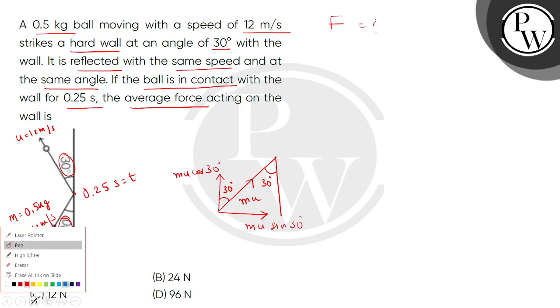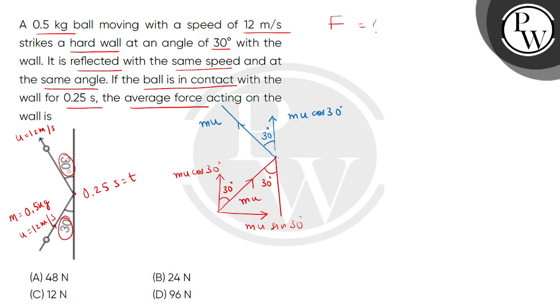Now, when we consider after reflection picture, the ball is reflected in this way. And again, the angle given is 30 degrees. So again, the momentum of this magnitude is mu. But if we find it in vector form components, this will be mu cos 30 degrees, and this horizontal component will be mu sin 30 degrees. So now we can see that the horizontal components, before incidence and after reflection, these two are opposite.